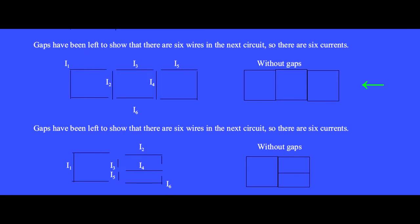This circuit has six wires, which are more readily apparent when we see them with gaps between each wire. Since there are six wires, there will be six currents. We'll arbitrarily pick a positive direction for each current. This circuit also has six wires, which are more readily apparent when we draw gaps between the wires. This circuit will also have six currents, labeled I1 through I6.